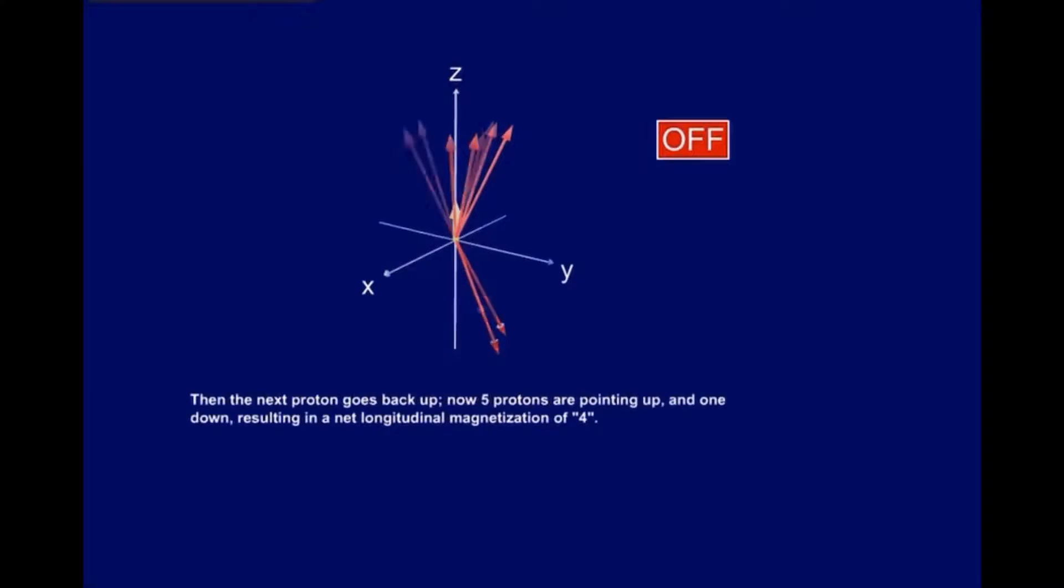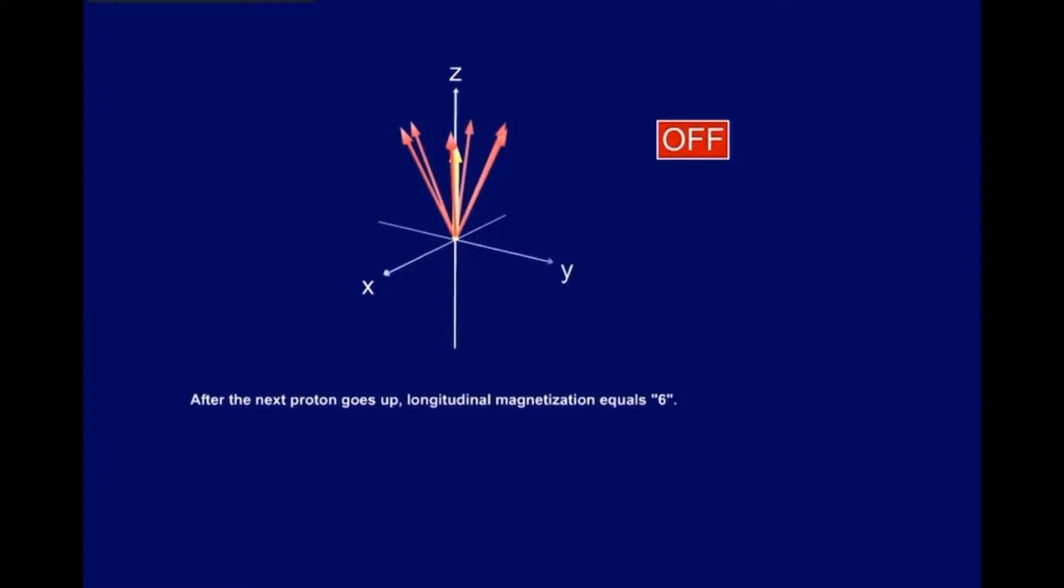Then the next proton goes back up. Now five protons are pointing up, and one down, resulting in a net longitudinal magnetization of four. After the next proton goes up, longitudinal magnetization equals six.